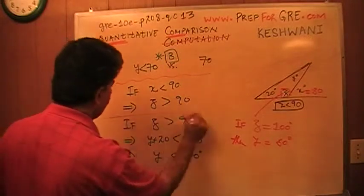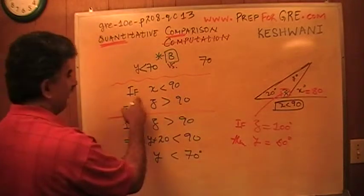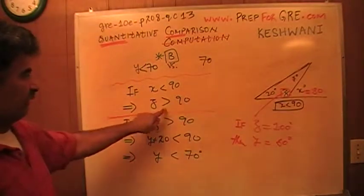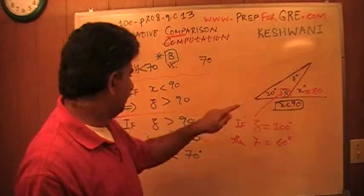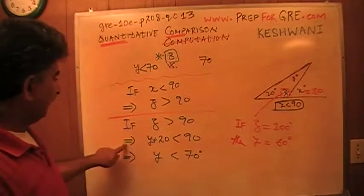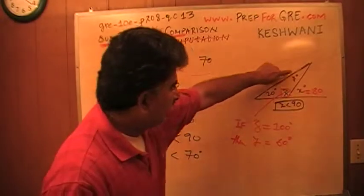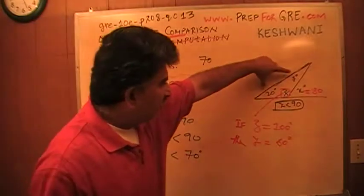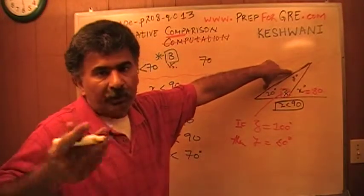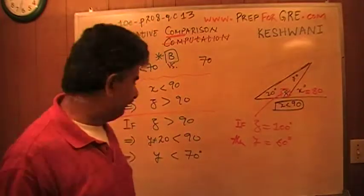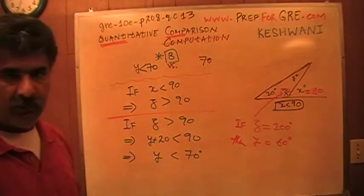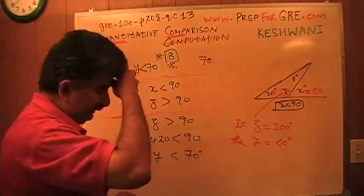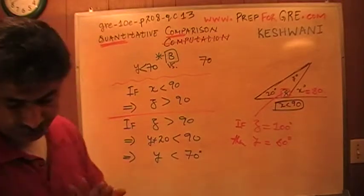So this is our first work. If x is less than 90, which is what we are told here, that implies that z would have to be more than 90. And if z is more than 90, then that implies that y plus 20 has to be less than 90. These two angles cannot also be equal to 90 or more than 90 because that will be over 180. That implies that whatever y is has to be less than 70. That's all.